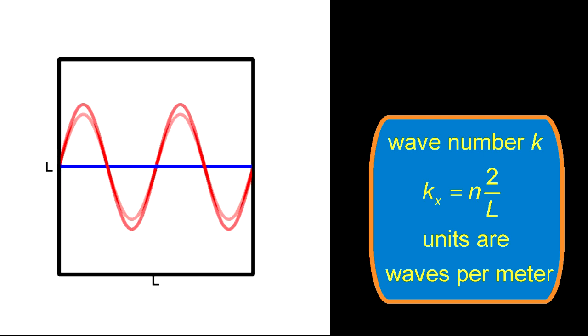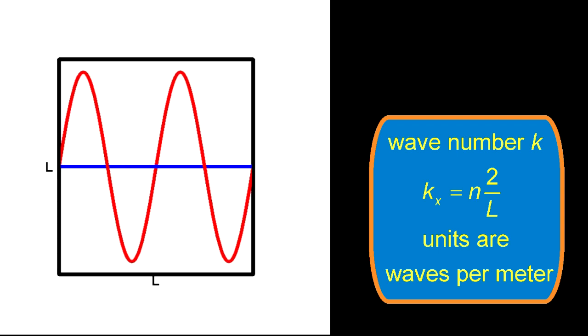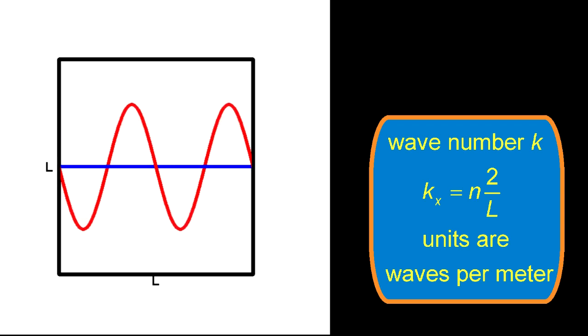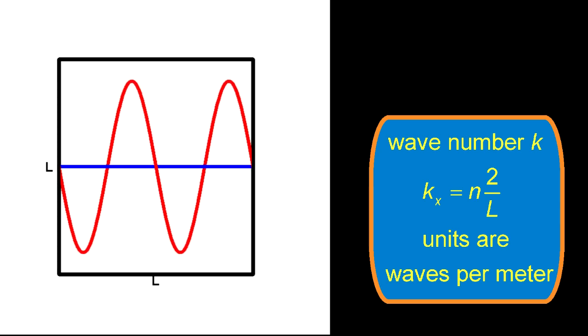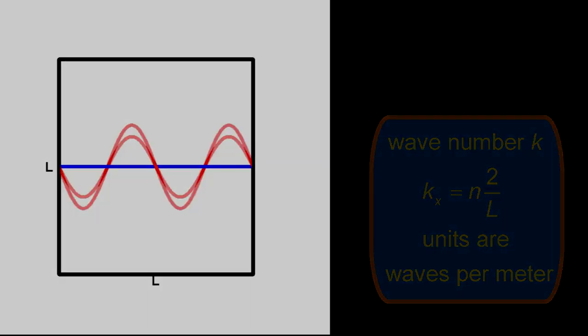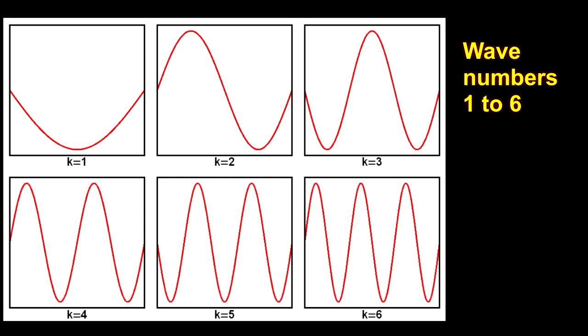We can further simplify our logic by changing our measure of length from meters to twice the cube size. Then the wave numbers become simple integers: 1, 2, 3, 4, etc. This plot is showing four waves per 2L, which is wave number 4. The next animation shows wave numbers 1 to 6.